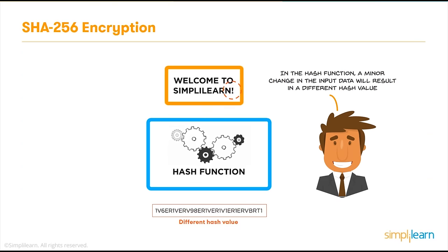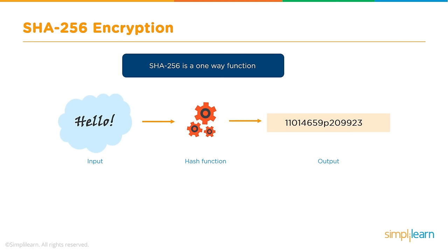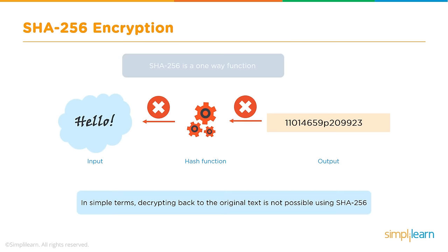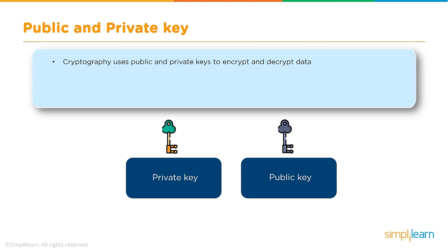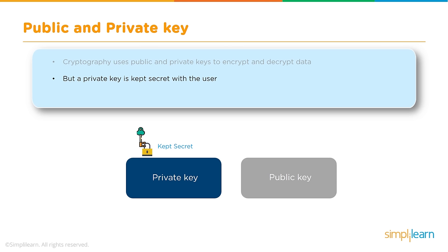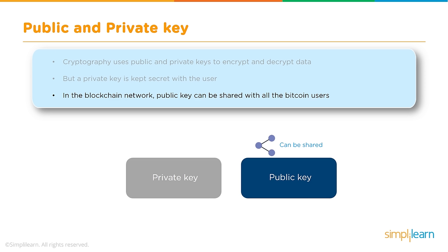SHA-256 is a one-way function: you give input, pass it through the hashing function, and get output — but the reverse is not possible. Decrypting back to the original text is impossible, making it very secure. Cryptography uses public and private keys to encrypt and decrypt data. The private key is always kept secret by the user. To send a message, you sign it with your private key but share your public key so others can decrypt and validate the message came from you.